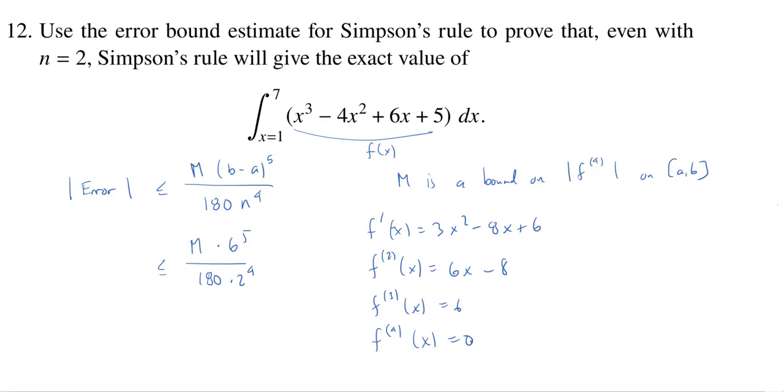And the fourth derivative, oh, my goodness, it's 0. So the absolute value of the fourth derivative is always 0, which means that m is equal to 0.